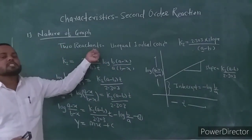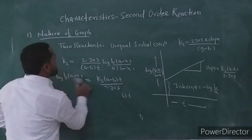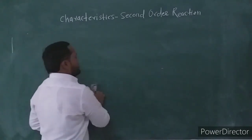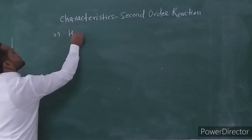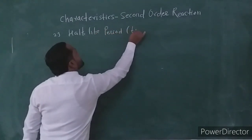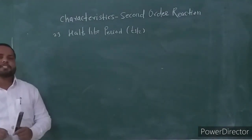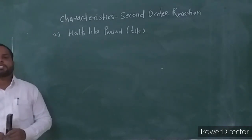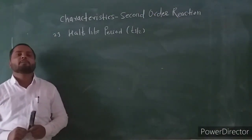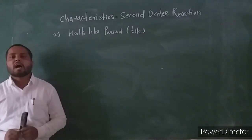This completes the first characteristic for the second-order reaction: graphical representation, the nature of graph. Now consider the second characteristic for the second-order reaction: the half-life period, represented by T-half. The half-life period is the time required for completion of 50% of the reaction, or the time at which 50% of the initial amount of reactant has reacted, leaving 50% unreacted.